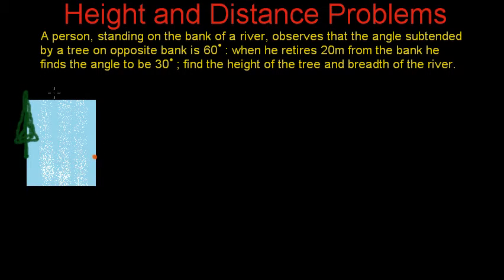And when this man looks at the tree, the angle subtended by the tree at this point is equal to 60 degrees. This is the angle subtended by the tree at this point. When he moves back, it becomes 30 degrees.